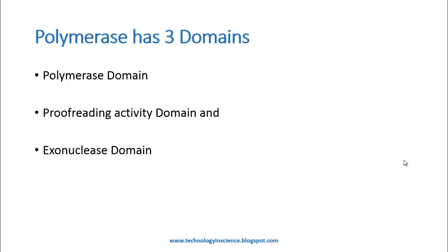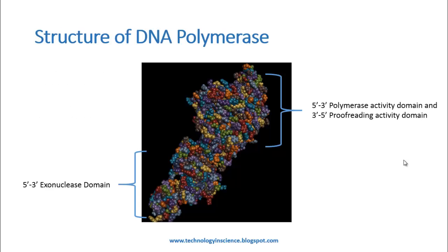When you look at the general structure of DNA polymerase, it has three domains: the polymerase domain, the proofreading activity domain, and the exonuclease domain. In the structure of DNA polymerase, you can see on the top there are two domains — the 5' to 3' polymerase activity domain and the 3' to 5' proofreading activity domain.